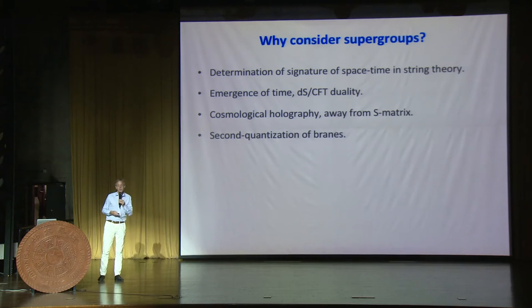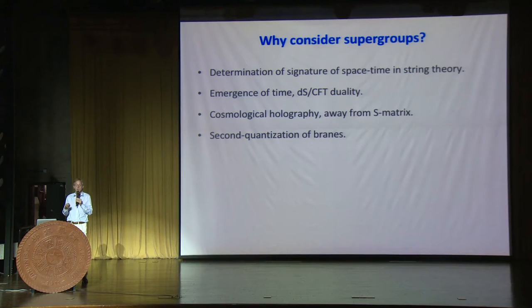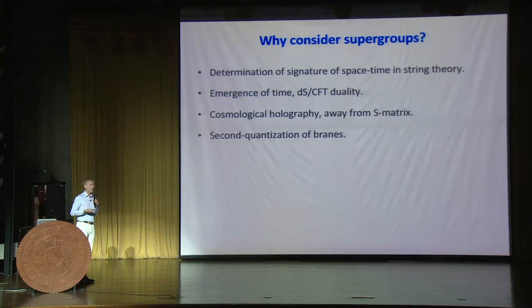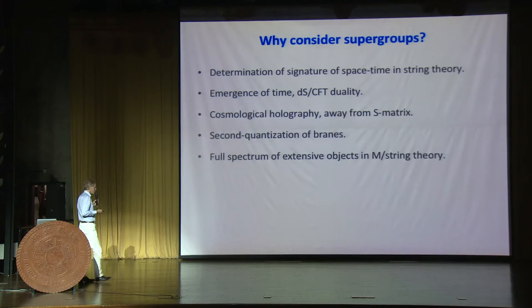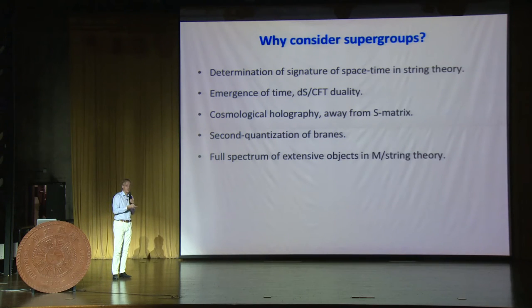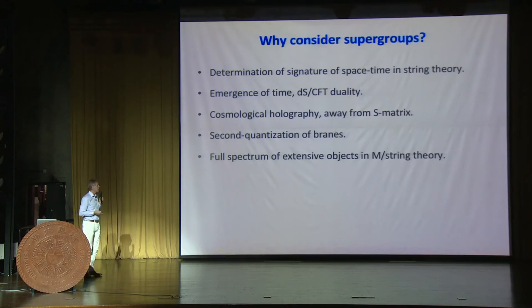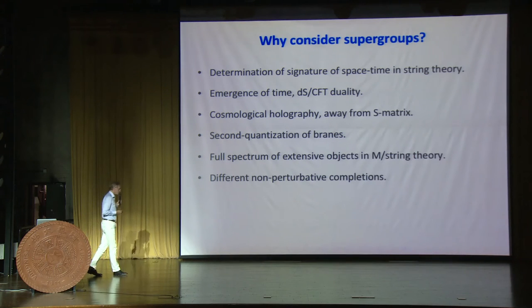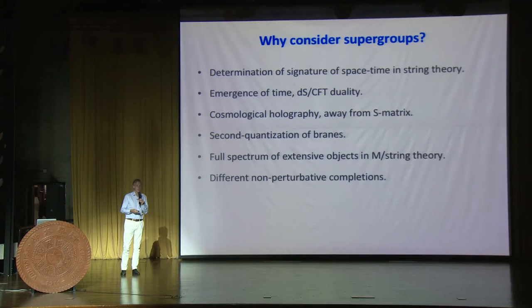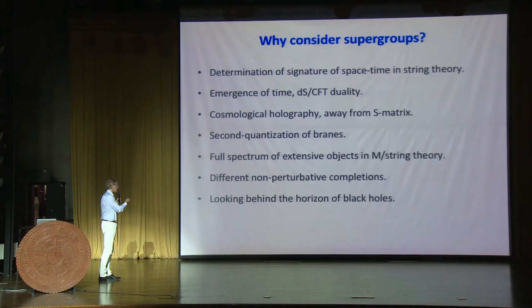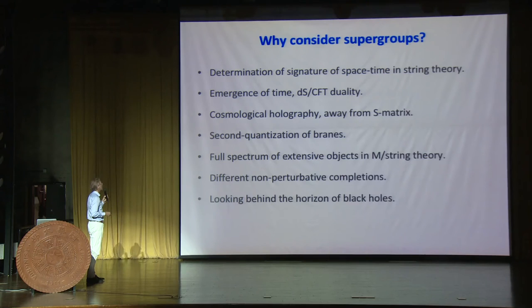These holographic ideas about the emergence of time are intimately connected to cosmological models, where we have to think in terms of a particular state developing in time, a non-equilibrium state, and we can't take the usual S-matrix point of view. It's also closely connected to whether we should, in certain contexts, consider second quantization of branes and the existence of virtual brane configurations. It's connected to what is the complete spectrum of objects in M-theory and string theory, and to what extent are our perturbative theories uniquely determined—are there possibly various different non-perturbative completions? Can these theories be used to look behind the horizon of a black hole?